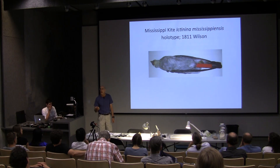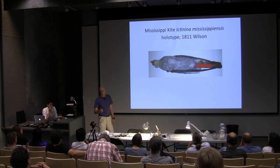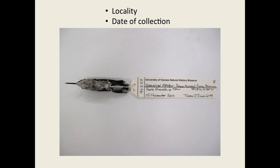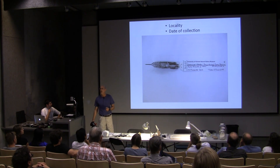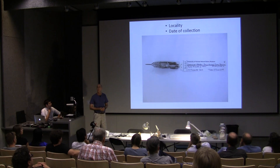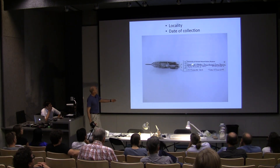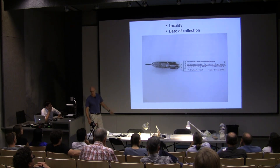These earlier specimens had almost no data with them — we were lucky to have a locality and perhaps a date. Our recent specimens are data-rich. I'm going to use this vervain hummingbird, found on the islands of Jamaica and Hispaniola, as an example. These are the kinds of data typically associated with a specimen today. On the front of the tag, you have locality, GPS-generated coordinates, and the collection date.